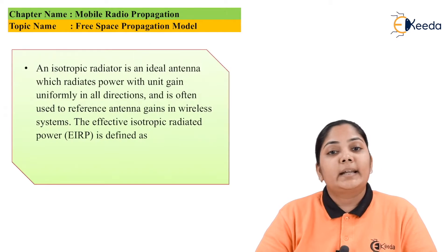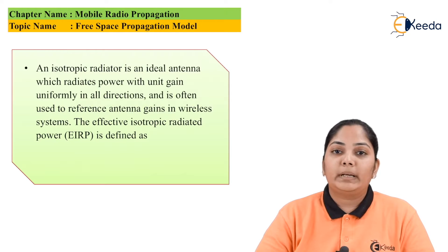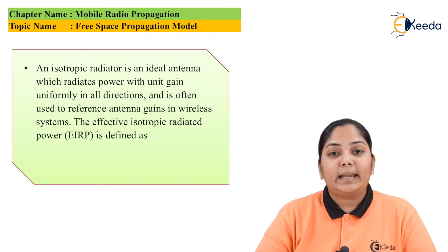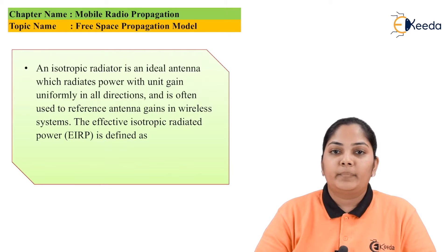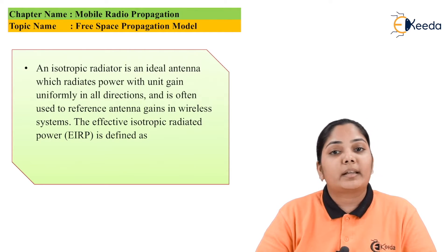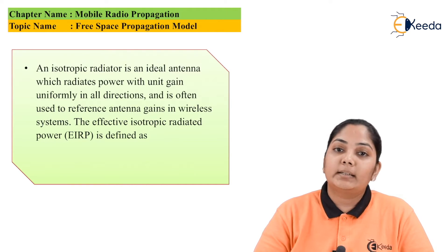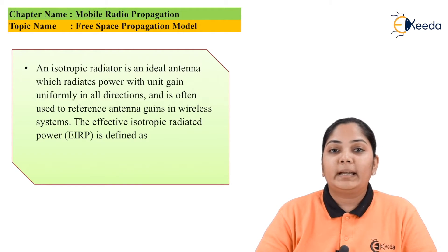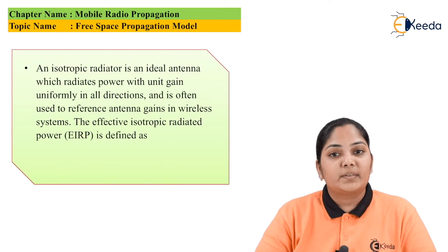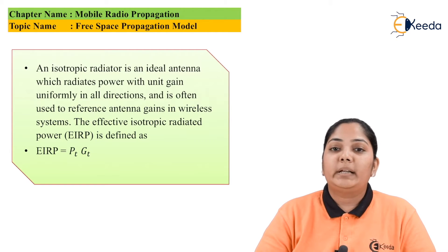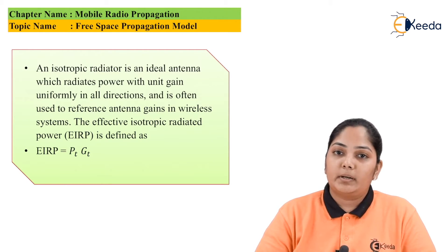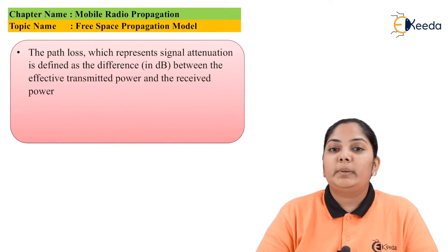Let us now understand what is meant by an isotropic radiator. An isotropic radiator is an ideal antenna that transmits in all directions with the same unit gain. This antenna is used as a reference for other antennas to understand their gain pattern. The Effective Isotropic Radiated Power, or EIRP, is defined as EIRP = Pt × Gt, where Pt is the transmitted power and Gt is the gain of the transmitting antenna.